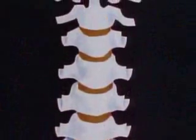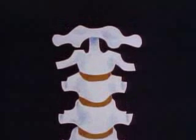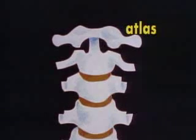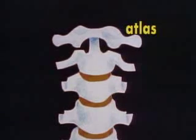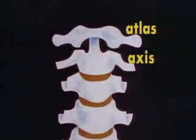At the top of the spine, the first two vertebrae support your skull. The upper bone is called the atlas, after the mythical Greek god who holds up the earth. The second vertebra is called the axis.